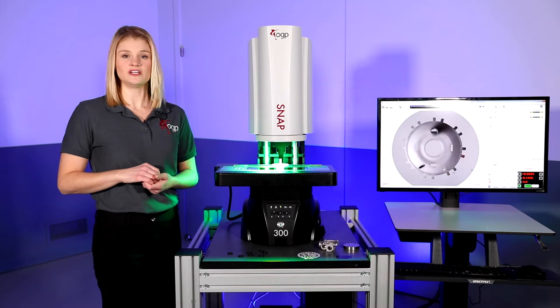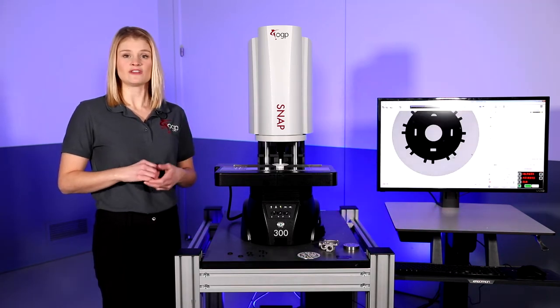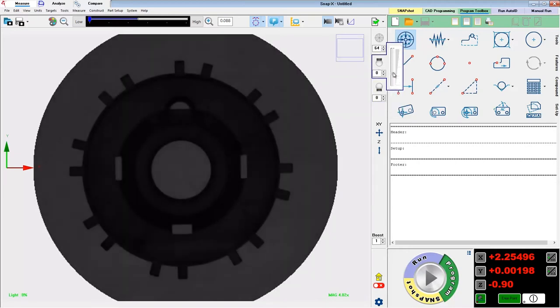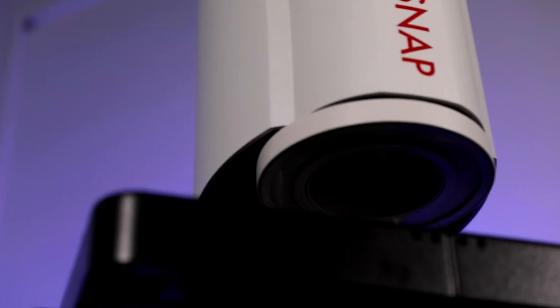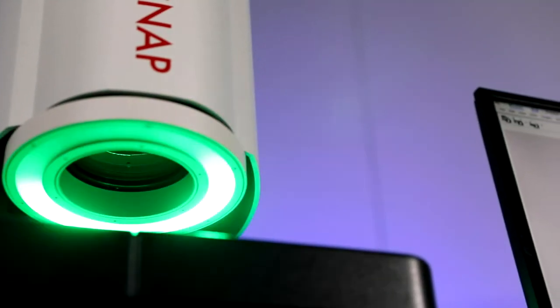To apply the best illumination for a variety of feature types and materials, SNAP systems come with a collimated LED sub-stage profile light, coaxial through the lens surface light, and a programmable 8-sector monochromatic ring light that lets you measure details from every angle.